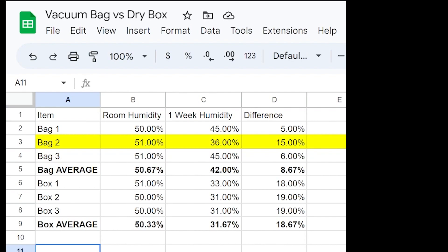As you can see, the dry boxes actually reduced humidity with the filament significantly more than the bags did. Now I had one bag that did a pretty good job and I'll show you in a minute what I think the issue there is. But the dry boxes were much better than the vacuum bags. Now let's take a look at the bags real quick so I can explain what I think is going on.